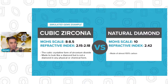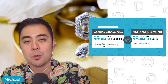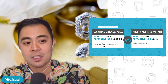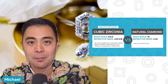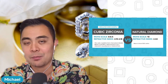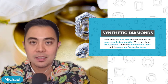The cubic zirconia — let's break that down in terms of the physical properties and the chemical composition. The cubic crystalline form of zirconium dioxide is made to look like a diamond, but it's not a diamond in any physical or chemical form. Whereas a natural diamond is made of almost 100% carbon. The reason we say almost 100% is because there are impurities and other elements that may be present in natural diamonds. So even though it's 99.9% or 99.8% carbon, it's not always exactly 100% carbon. Basically, it's a carbon rock.